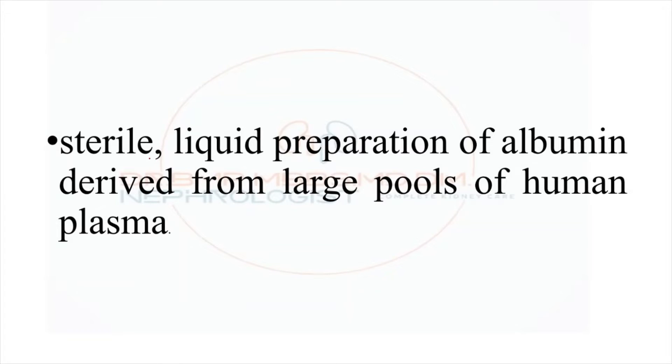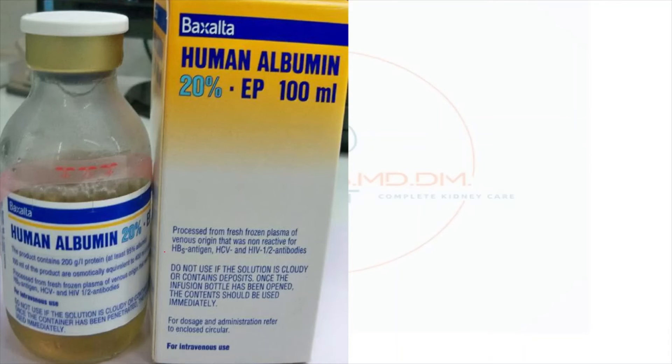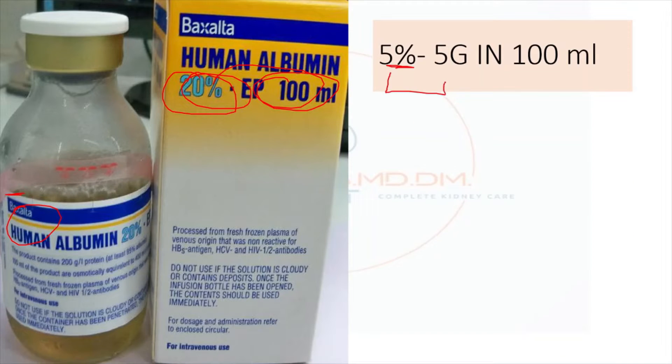First, what is this? This is nothing but a sterile liquid preparation of albumin derived from the large pool of human plasma. It is basically a human plasma derivative. Regarding the nomenclature present in the labeling, there is mentioned as 20% in 100 ml. That means 20 grams of albumin is present in 100 ml of this bottle. 5% means 5 grams is present in 100 ml.